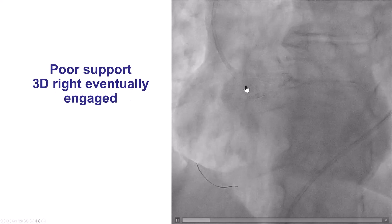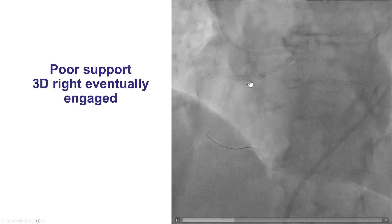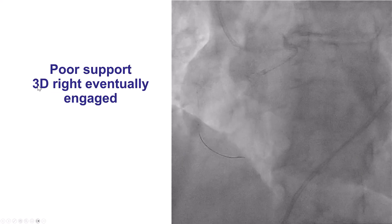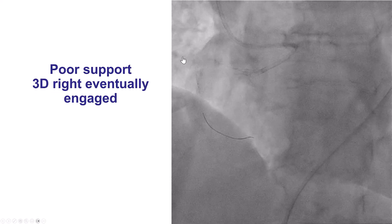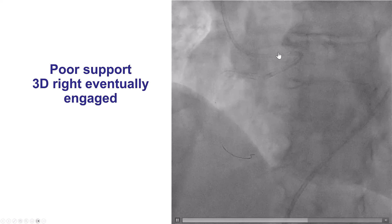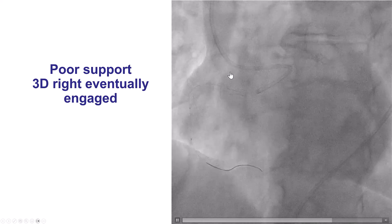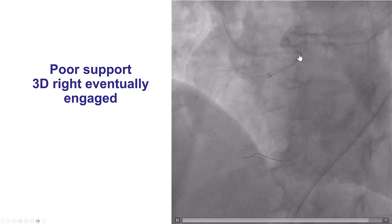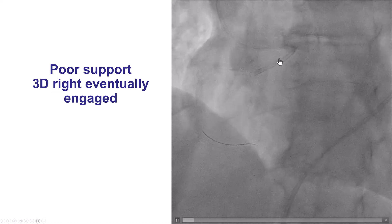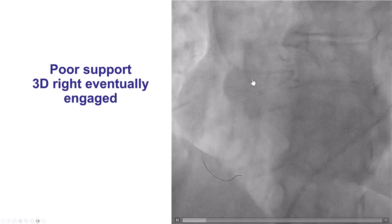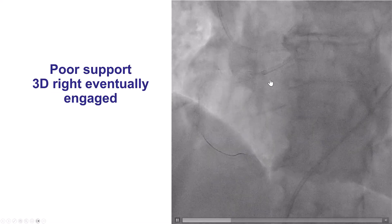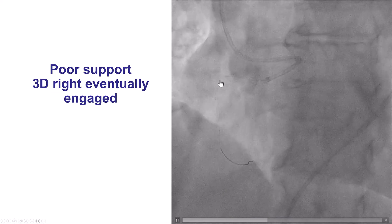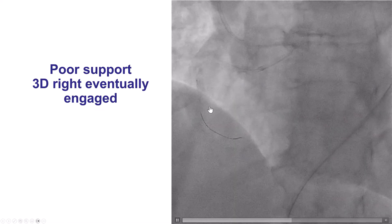There was difficulty with engagement and poor support with the guide catheter. Eventually, a guide catheter called 3D-RIDE, which provides strong support for RCA interventions through contact with the opposite aortic wall, was able to engage the right coronary artery. This guide can provide strong support similar to that provided by the Amplatz. After doing that, we were able to deliver a balloon down to the mid-RCA.